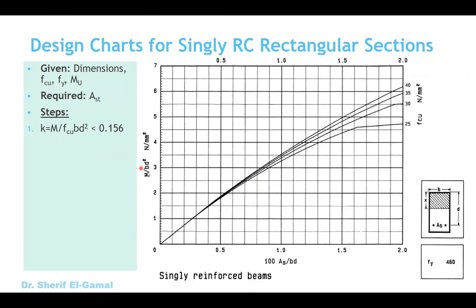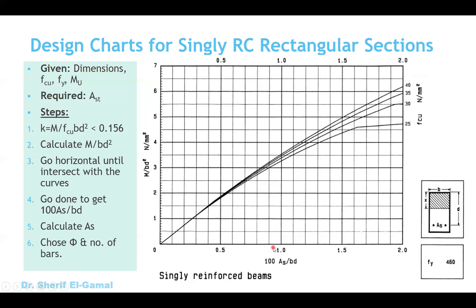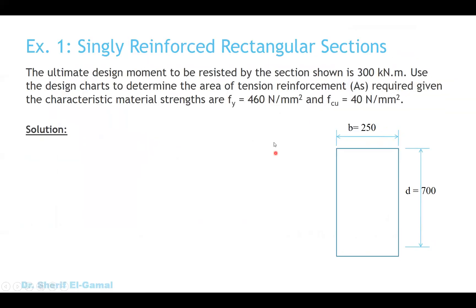Then calculate the value of M over BD squared. Based on that value, go horizontal on the chart and intersect with the curve corresponding to your concrete compressive strength FCU. Then go vertically down to read the tension steel reinforcement ratio. Using that ratio in the equation, you can calculate the area of steel — it will be the only unknown. Once you have the area of steel, you can choose the suitable diameter and number of bars. So: M over BD squared, go horizontal, intersect with the suitable curve, go vertically down, read the reinforcement ratio, and get the area of tension steel.